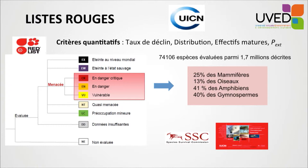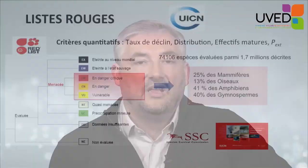This is done at both the global and local level. More than 74,000 species have been assessed among the 1.7 million species described, which are only a part of existing biodiversity. Many groups such as insects, lichens, and mosses are not well assessed, but some groups — mammals, birds, amphibians, and gymnosperms — are well known, with rates of threatened species ranging from 13% for birds up to 40% for gymnosperms and amphibians.